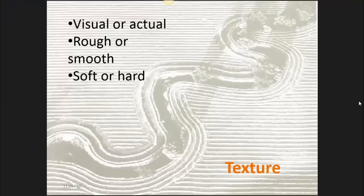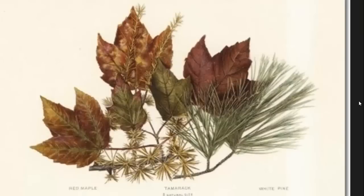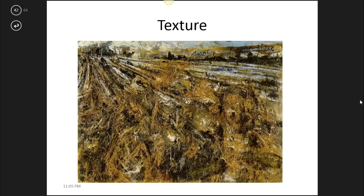The next element is texture. Texture can be something that you can actually touch or it can be visual. It can be rough or smooth, soft or hard, prickly, bumpy — a whole range of different words can describe it. This painting actually has straw stuck onto it, and so you know that if you were to touch it, it would have a very bumpy, rough texture. But visually there's also texture to it — we can look at it and see that it's not smooth.